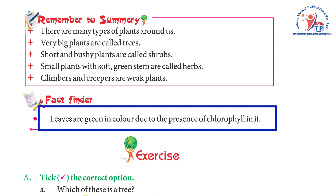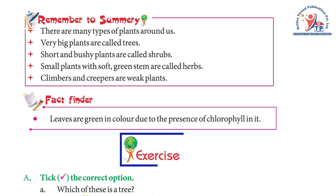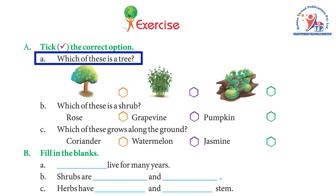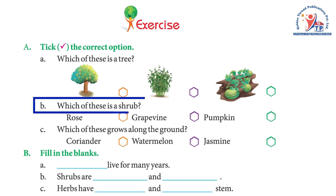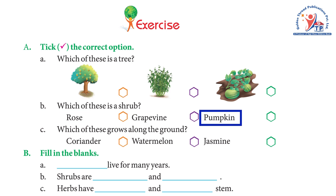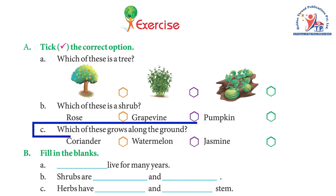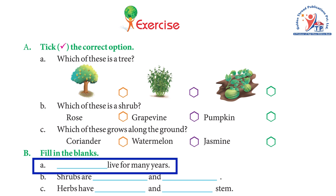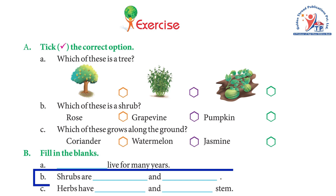Fact finder: leaves are green in color due to the presence of chlorophyll. Exercise A — tick the correct option: (a) Which of these is a tree? Answer: picture one. (b) Which of these is a shrub? Rose, grapevine, pumpkin — answer: rose. (c) Which of these grows along the ground? Coriander, watermelon, jasmine — answer: watermelon.